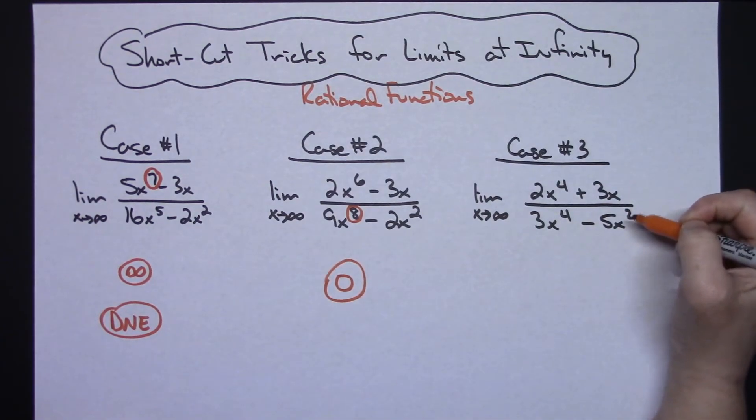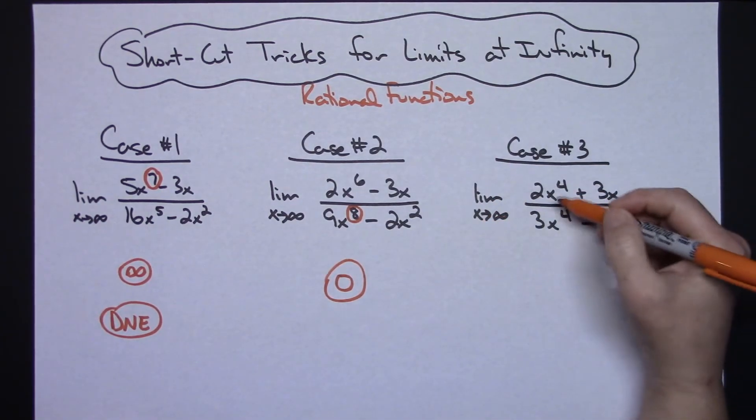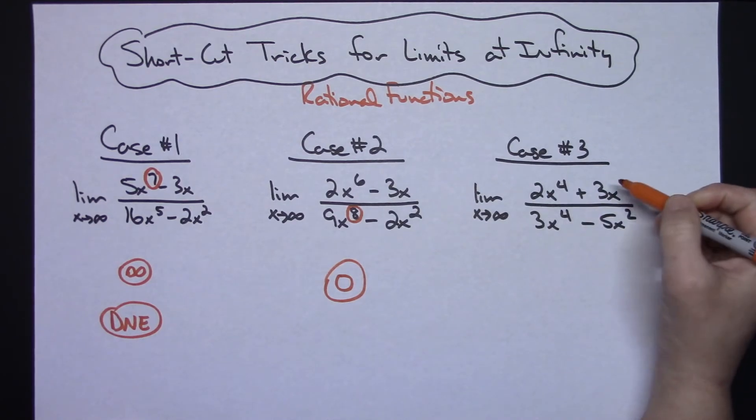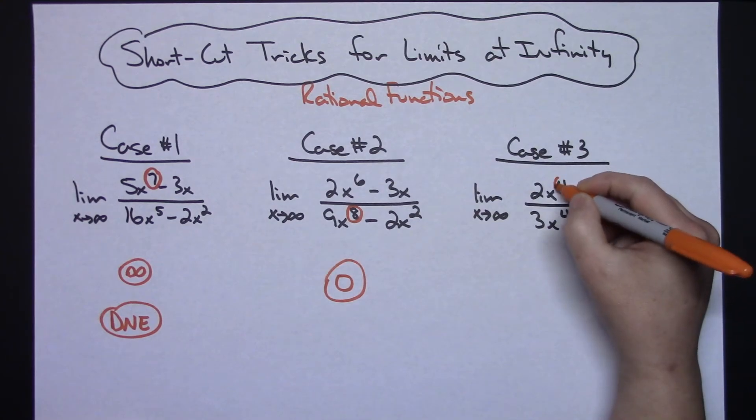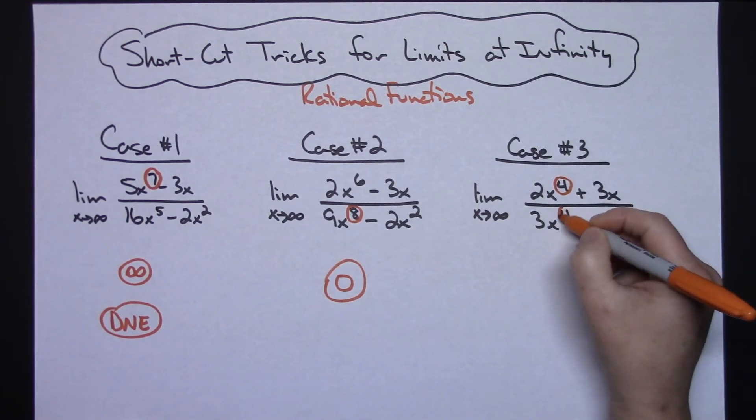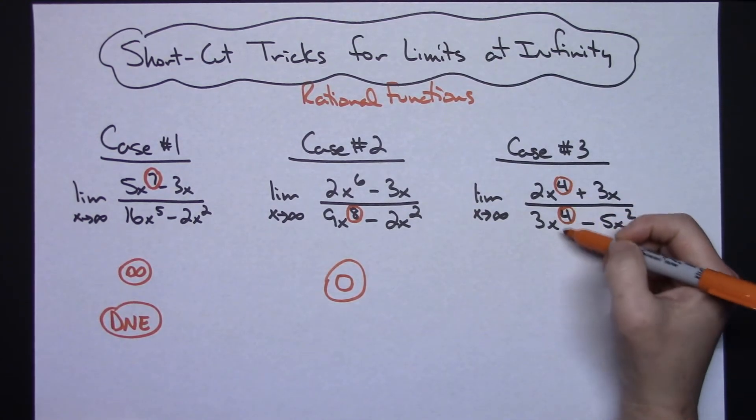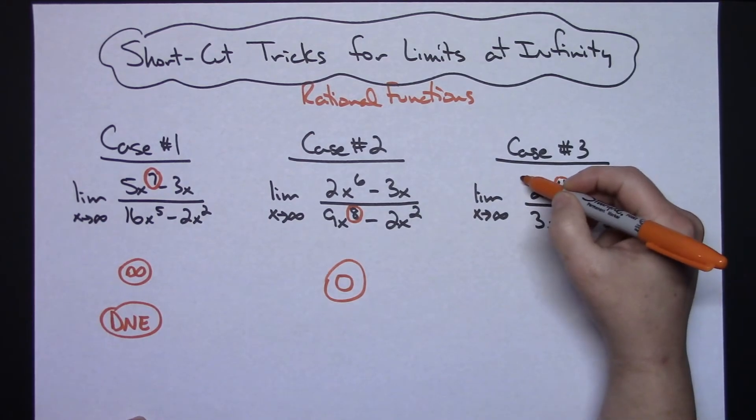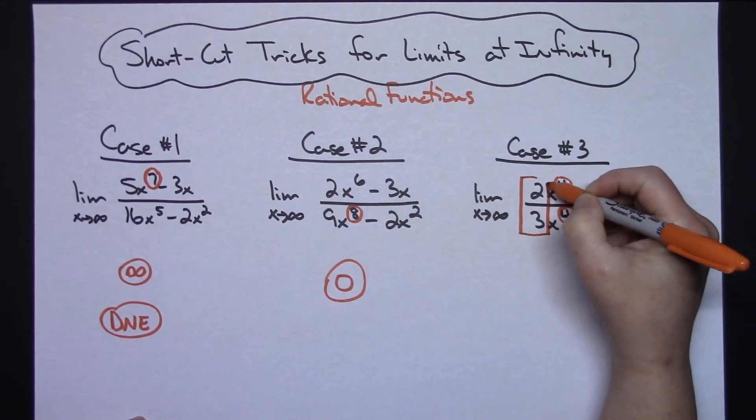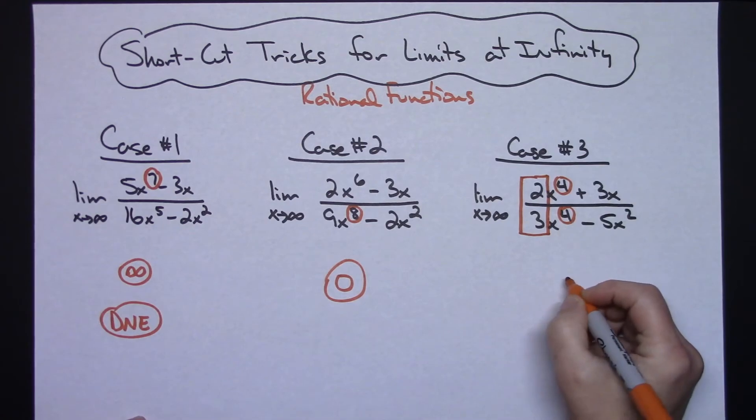And in this third case I've got the limit as X approaches infinity, again another rational expression. Taking a look at those degrees, I have a degree of 4 in the numerator and a degree of 4 in the denominator. So whenever that happens, you can take a look at those leading coefficients and know that your limit is approaching two-thirds.